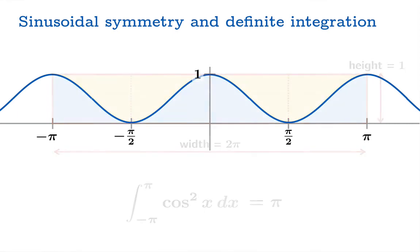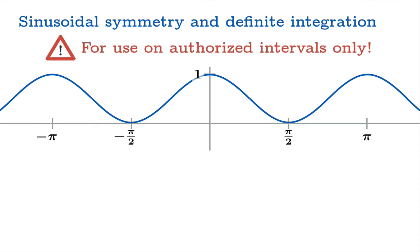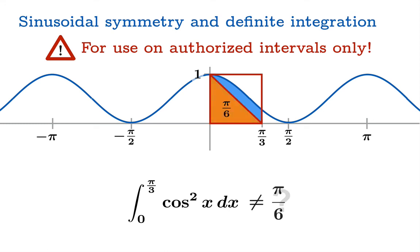A word of warning is in order, though. This trick can only be used on authorized intervals only. So, what do I mean by that? Let's go back to our example from 0 to π/3. You might say, hey, this is a great trick. Let's just find the area of the rectangle and cut it in half. Well, in this case, that would give you π/6. But it's pretty obvious that that's not the answer we're looking for. Because π/6 is the area of that triangle right there.